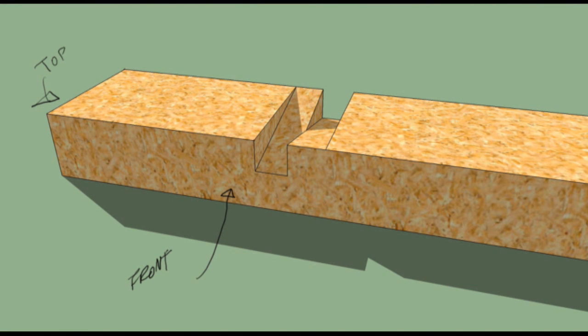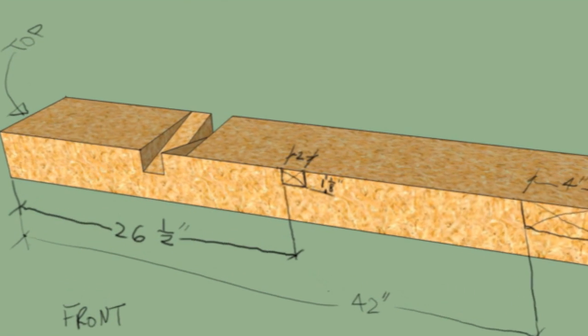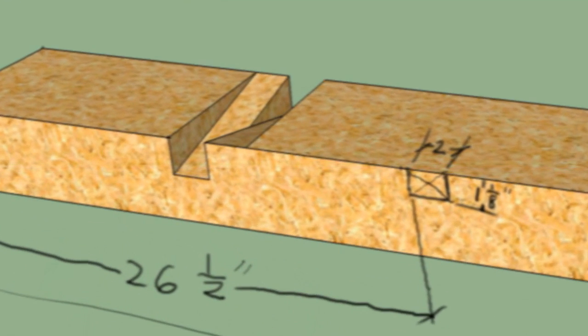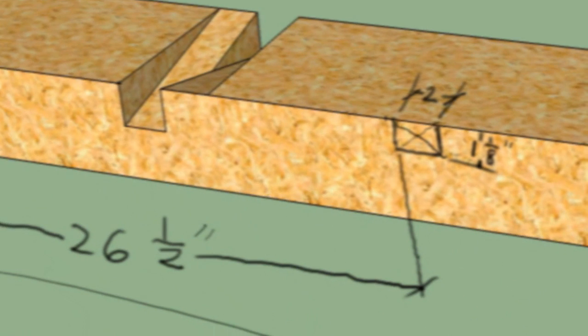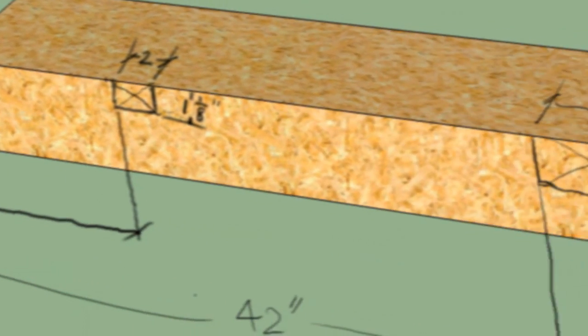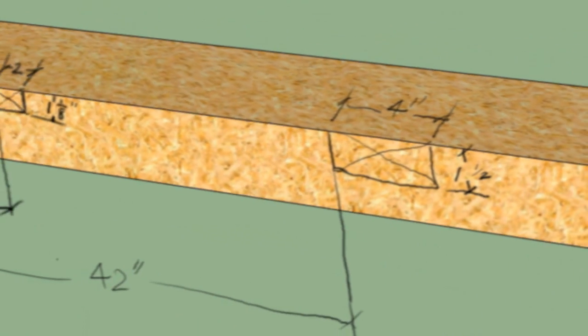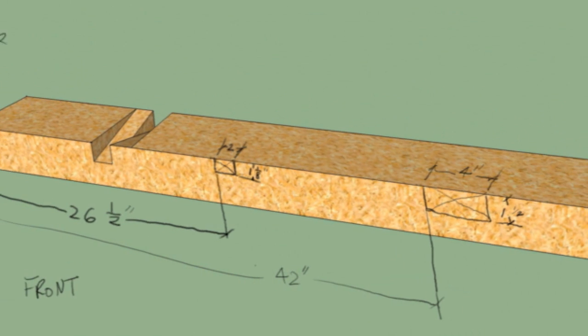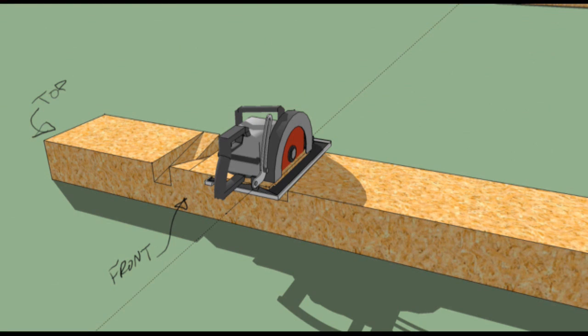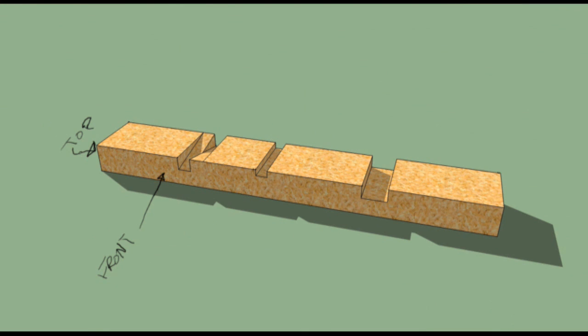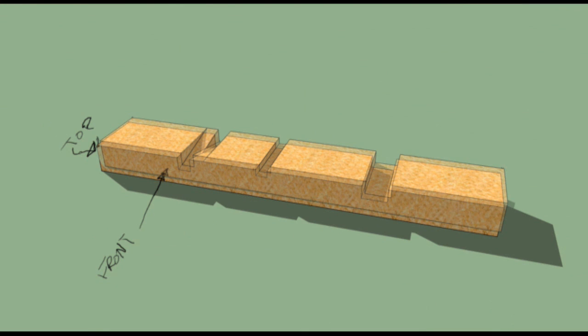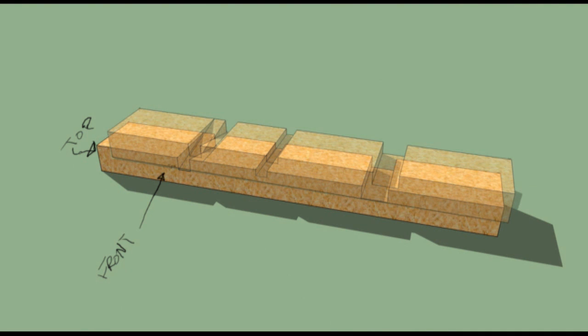Then you go on to make the middle arm hole and the leg hole. Those two are really easy to do. Come down 26 and a half inches, make a square at 2 and 1/8. And 42 inches down for the leg hole at 4 by 1.5. Then you just use the circular saw, cut as many scores as you can, chisel it out, and you're halfway there.